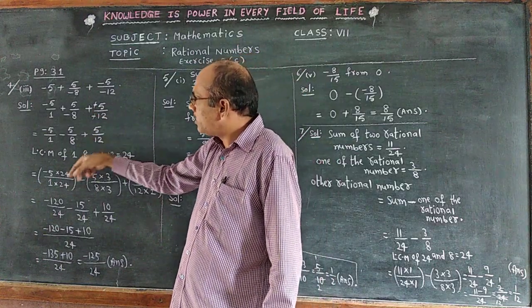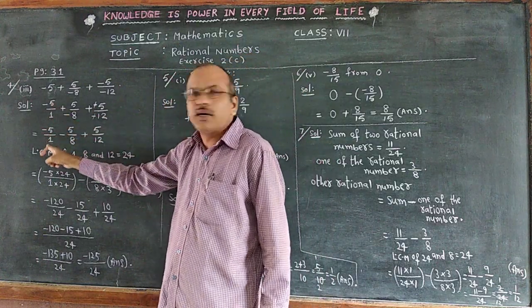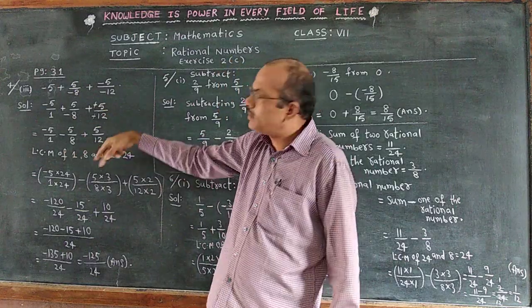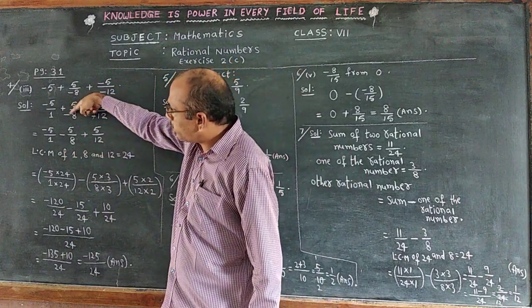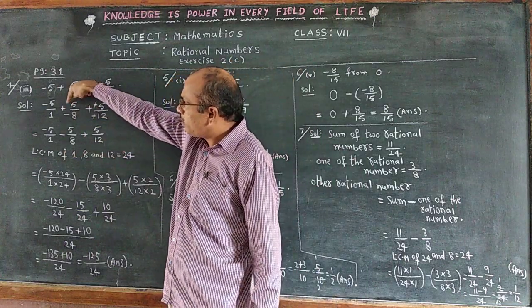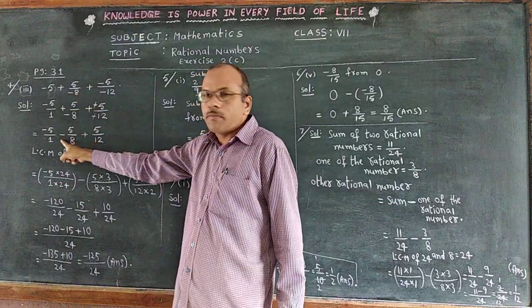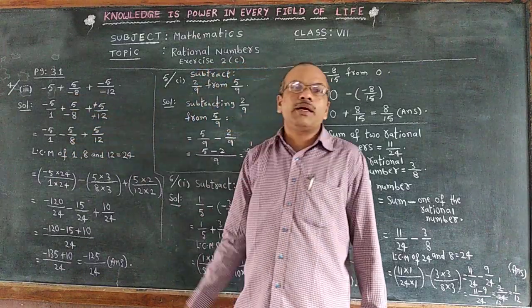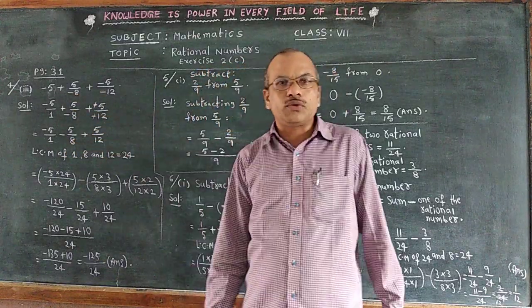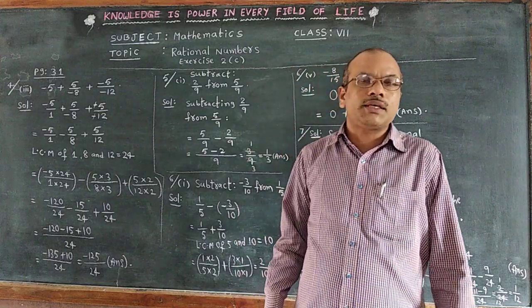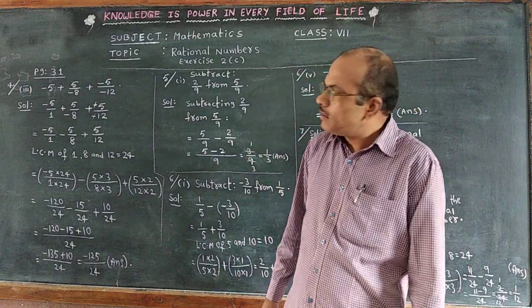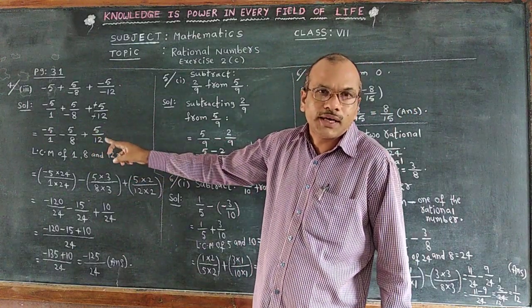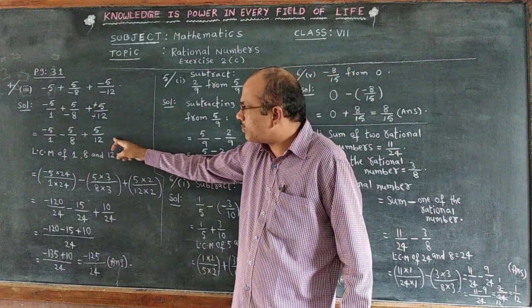Starting with minus 5 by 1 as it is. Then, plus into minus gives minus, so the next term becomes minus 5 by 8. The last term is plus 5 by 12. Now the LCM of the denominators 1, 8, and 12 is needed.